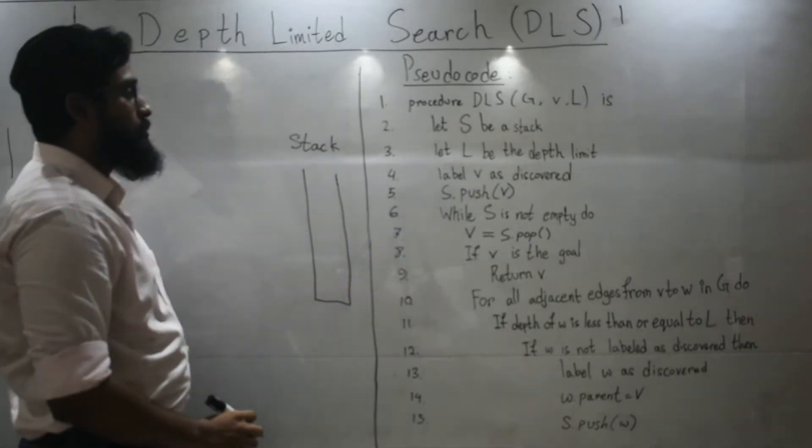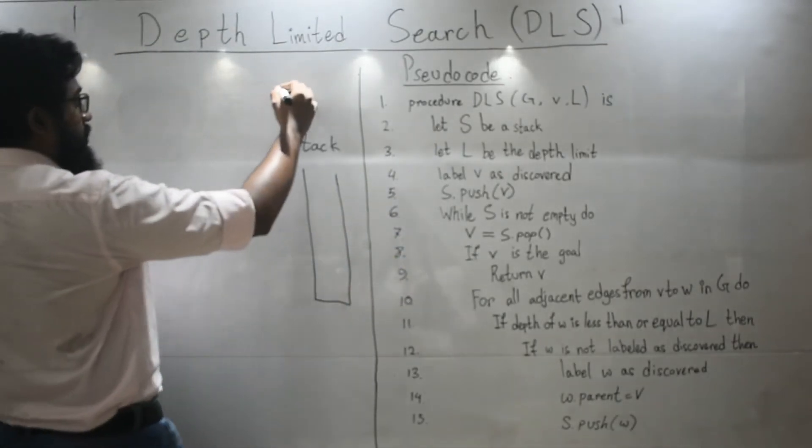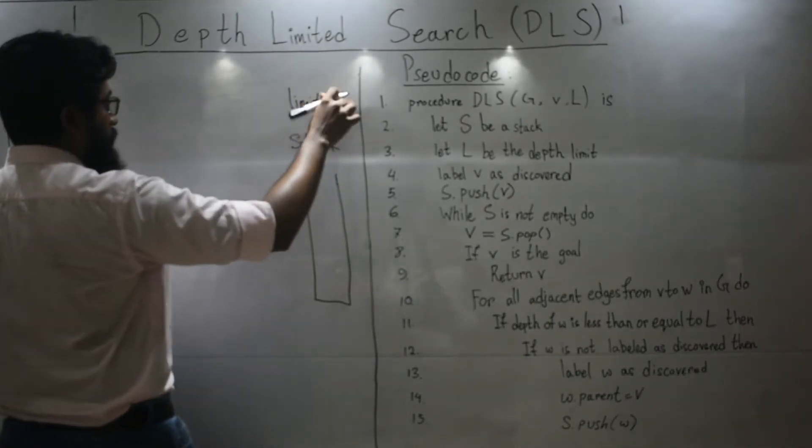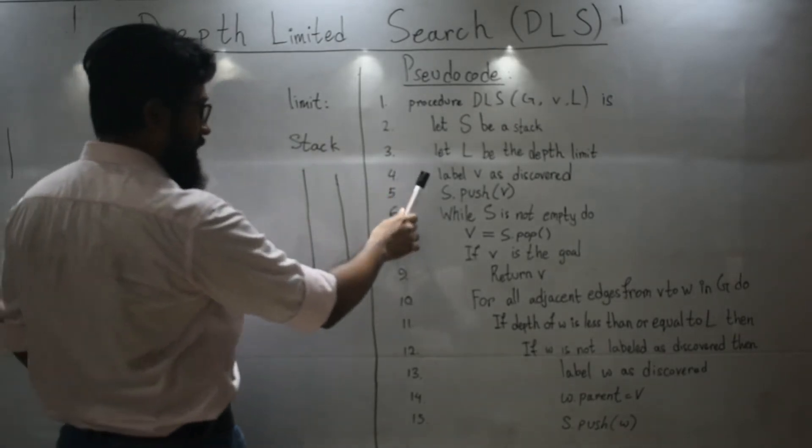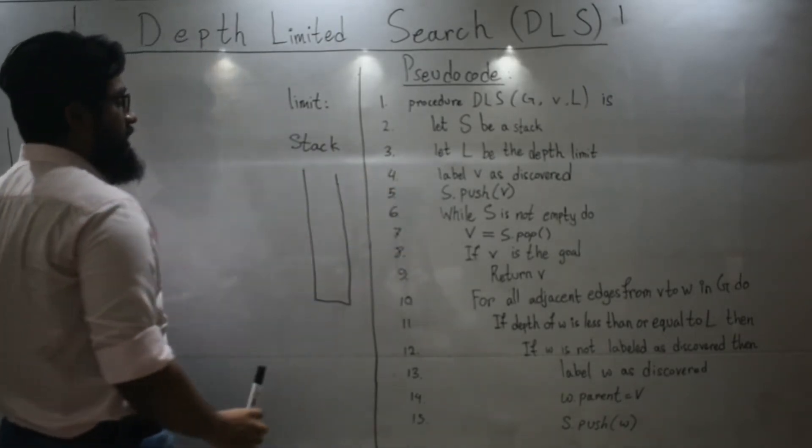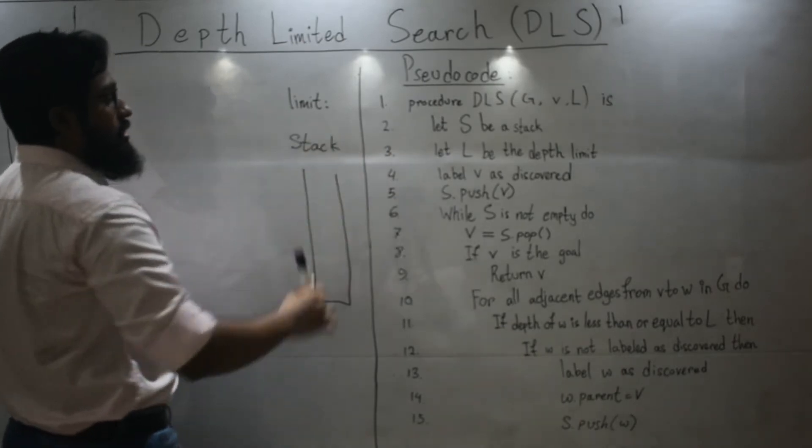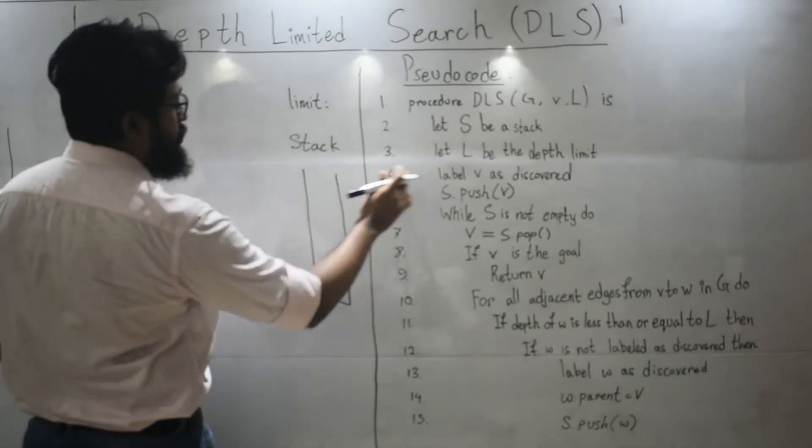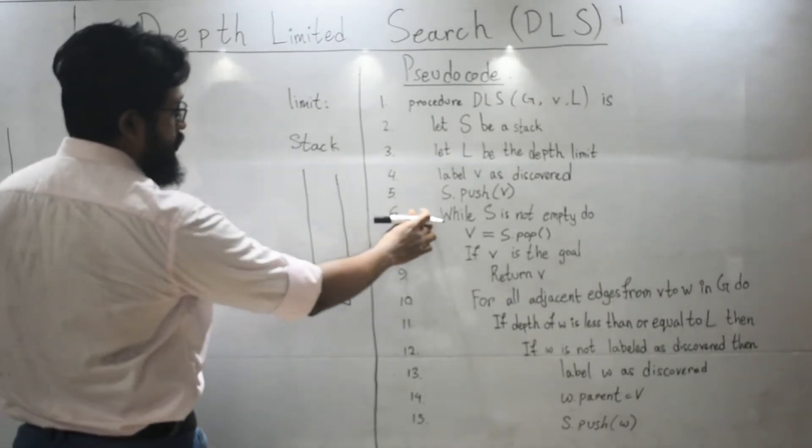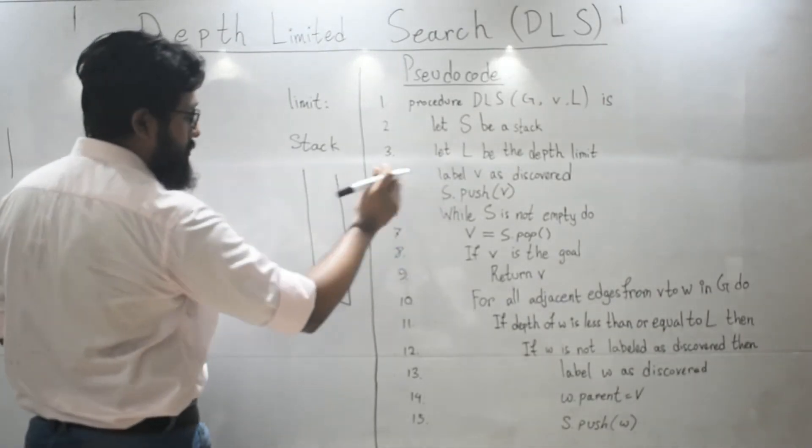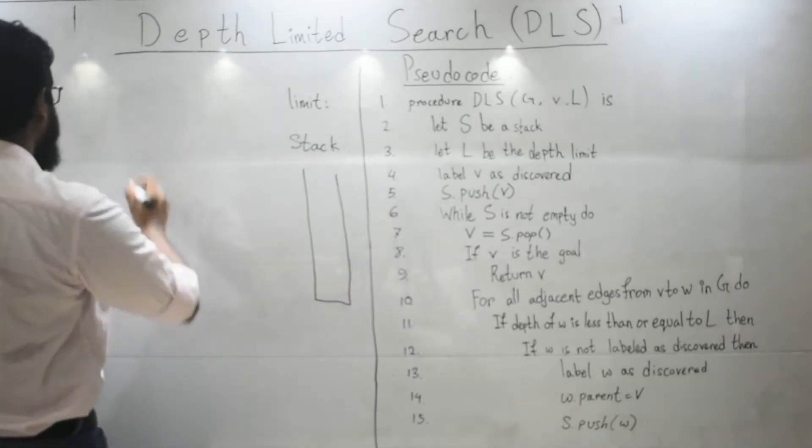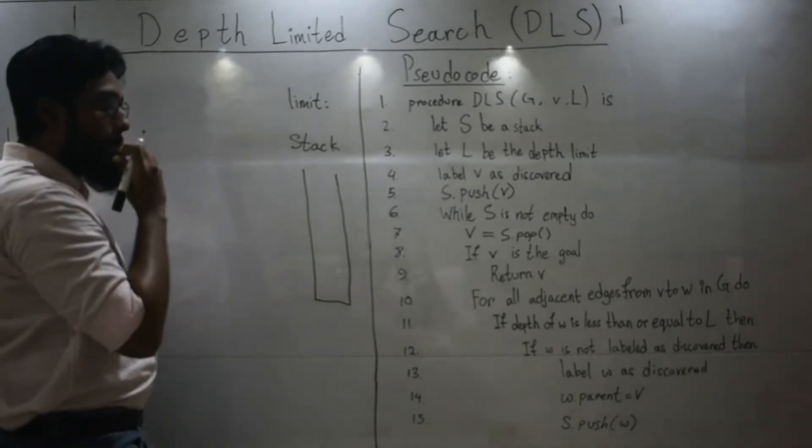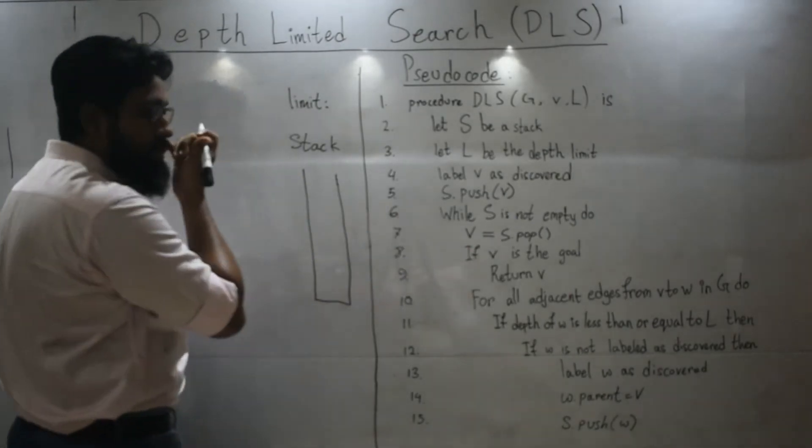Let L be the depth limit. So, let's set a limit. We will set a limit. And then, label V as discovered. So, we will discover our root node and then push it in the stack. And then while the stack is not empty, we will pop the value and put it in a variable V. And if it's a goal node, then we return it.